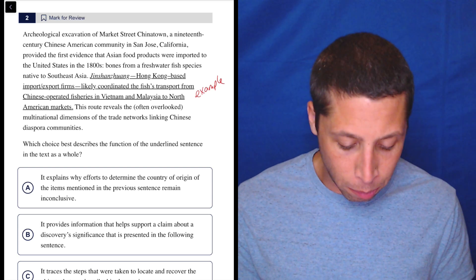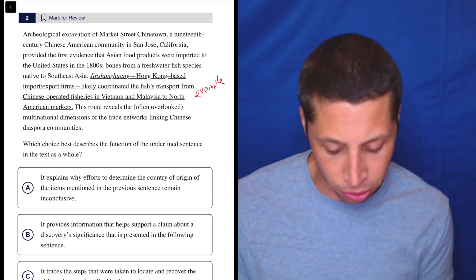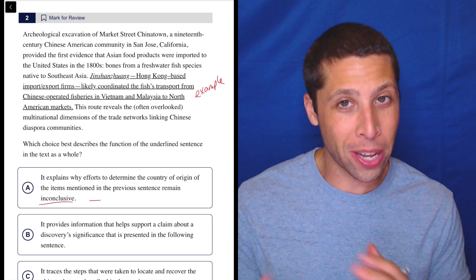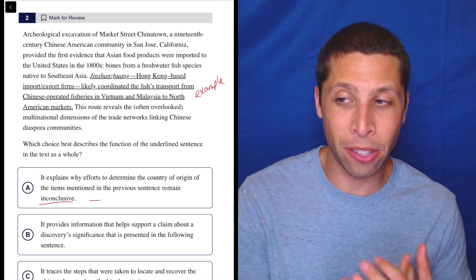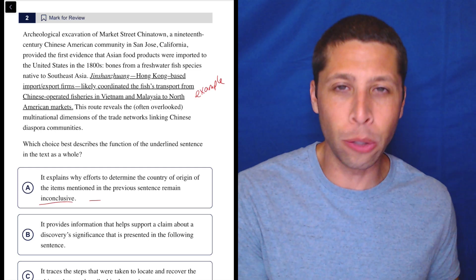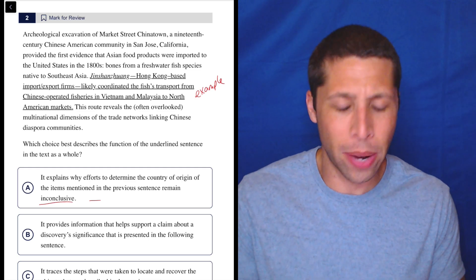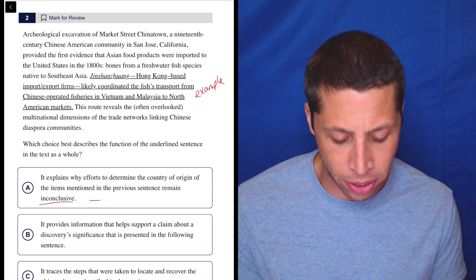So choice A, it explains why efforts to determine the country of origin of the items mentioned in the previous sentence remain inconclusive. Well, that definitely seems negative. I don't know that I see any sort of negativity here. Inconclusive means also that we cannot make a conclusion. And it seems like it's an example, right? It seems like we have a way to get the origin of these things because we know they're from Vietnam and Malaysia. This just seems contradictory.